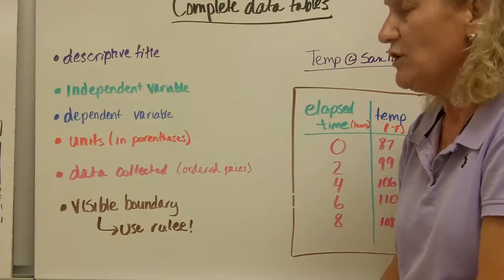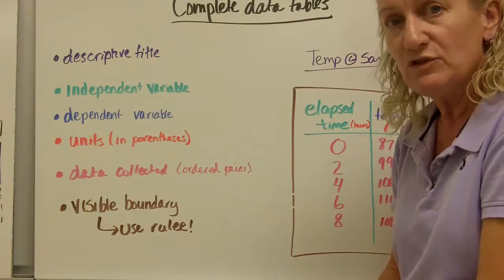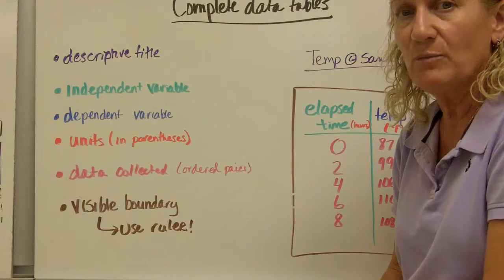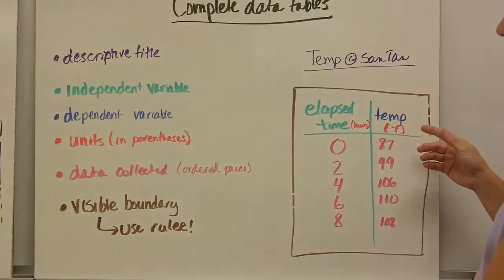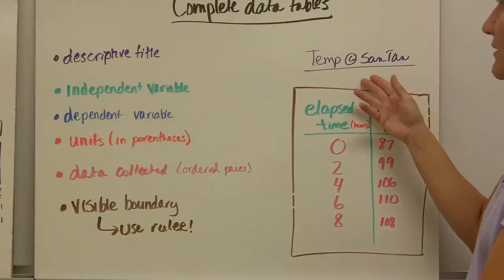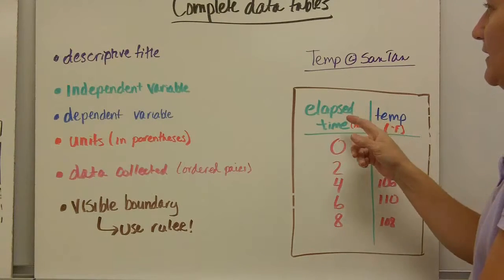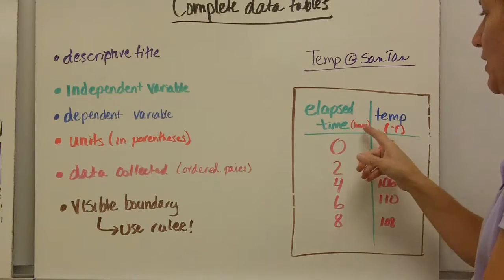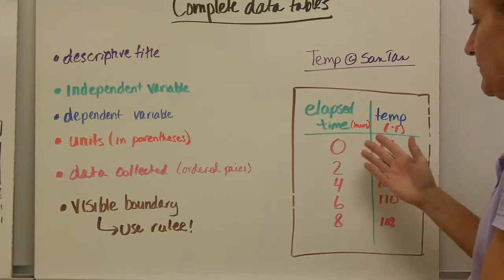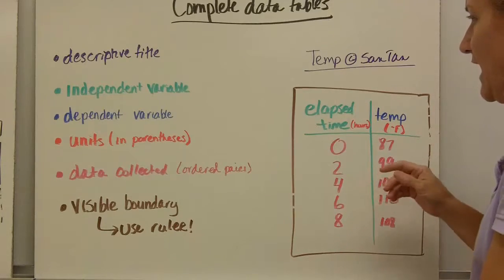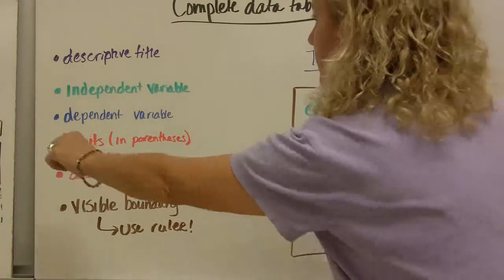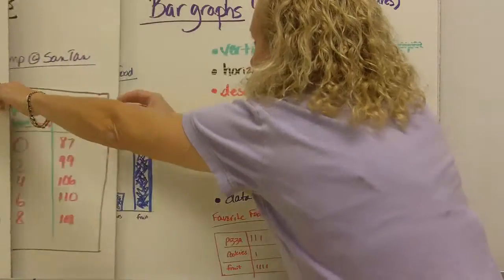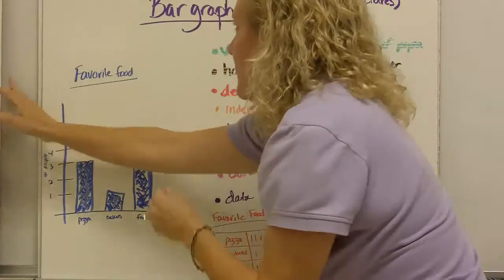And finally, as always, we need visible boundaries. And again, please use your rulers. I like straight lines. I want things to look neat in your science notebooks. So here's an example of a complete data table. The descriptive title, the column headings that tell you the independent and the dependent variable along with the units. There's your data and ordered pairs and a visible boundary.